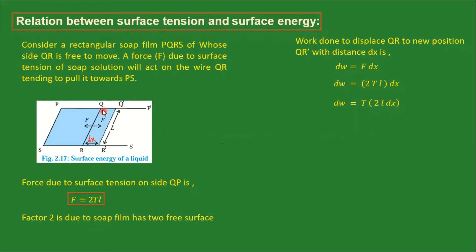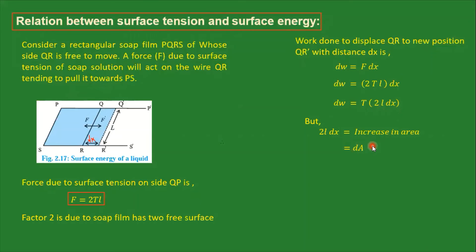l multiplied by dx gives us the area — the increased area of region QQ'R'R. So 2l·dx is the increase in area. The factor of 2 is because both surface sides have increased in area. We use the symbol dA for increase in area, so dW = T × dA.